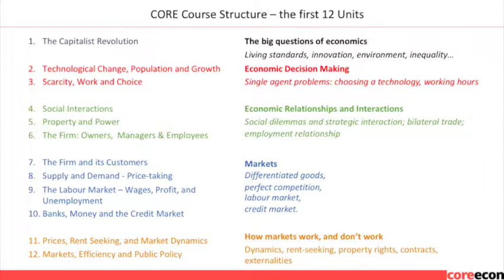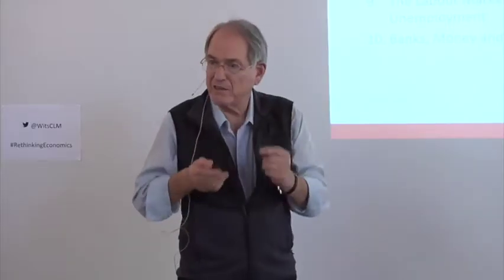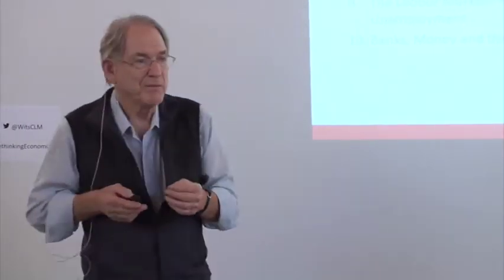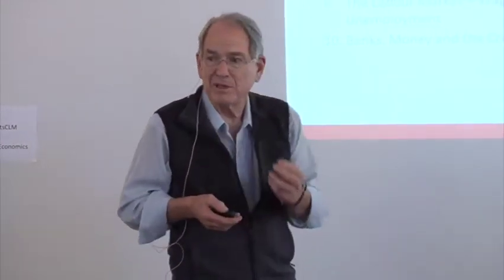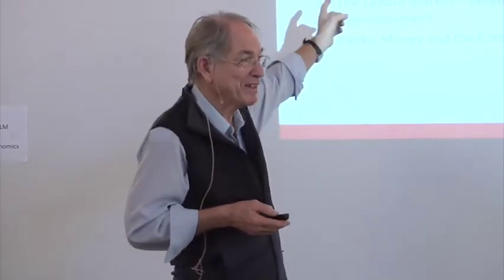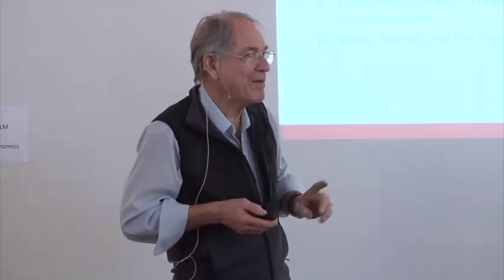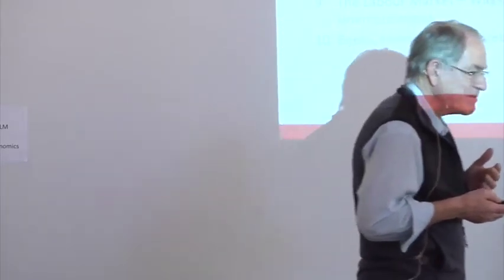After that there's basically a set of units on markets. We get to price-taking markets in Unit 8. Interestingly, Maskelet, Winneson, and Green — the leading PhD-level micro textbook — don't bring up the perfectly competitive market until Chapter 8 as well. They did it because they wanted to study basic questions about how human beings interact in market-like situations before going to the abstraction of supply and demand curves. I think it makes good sense for them, and it makes good sense for us.